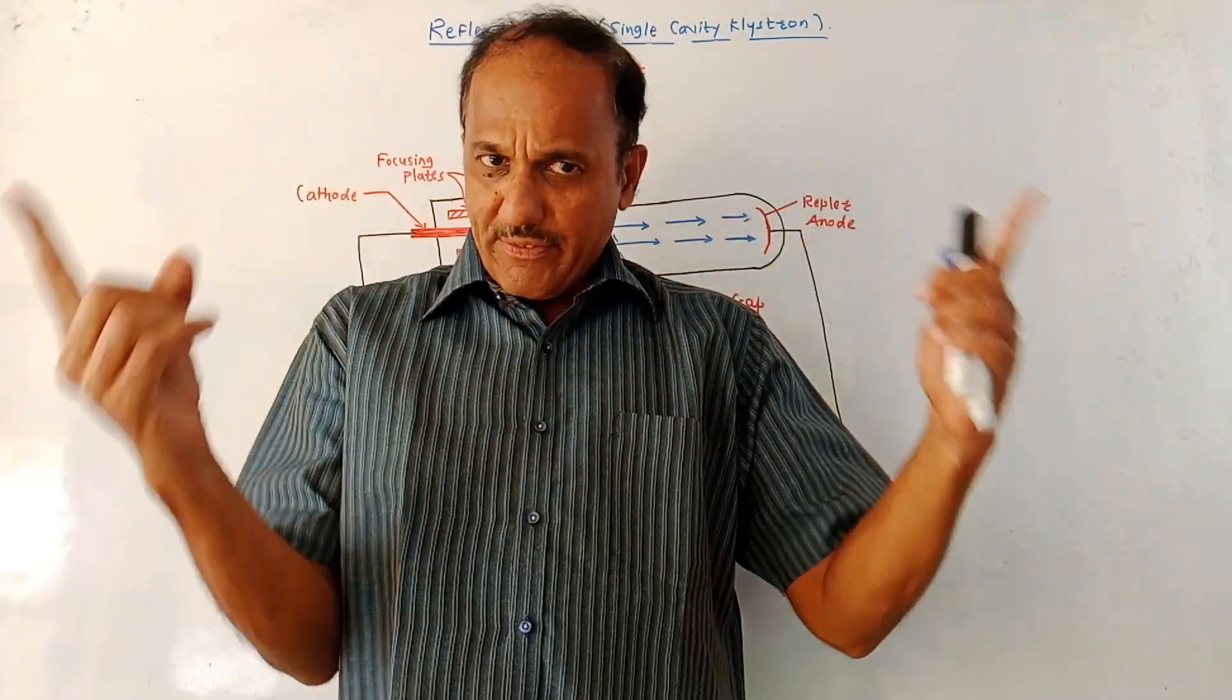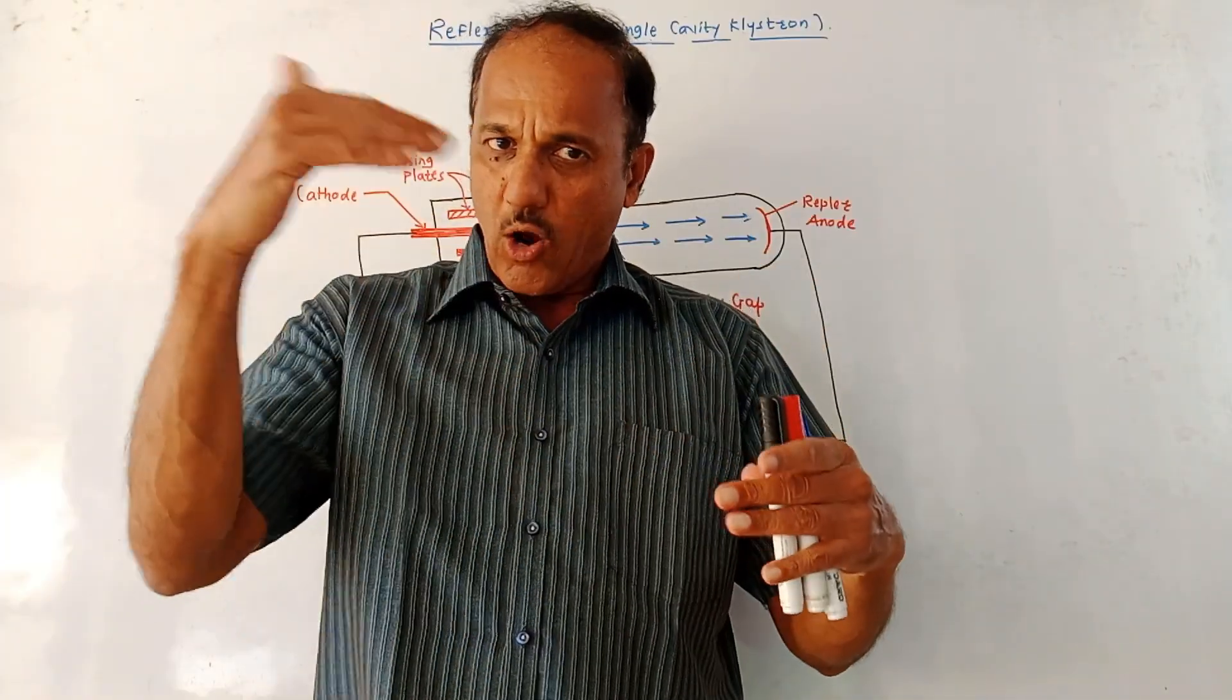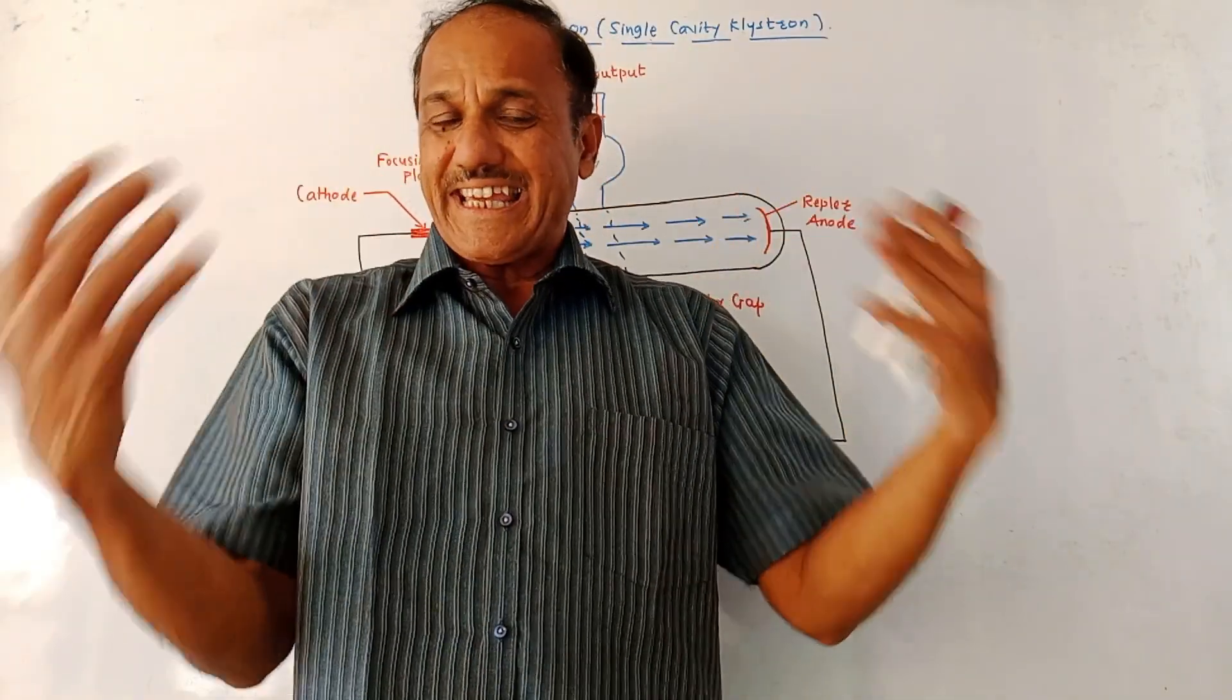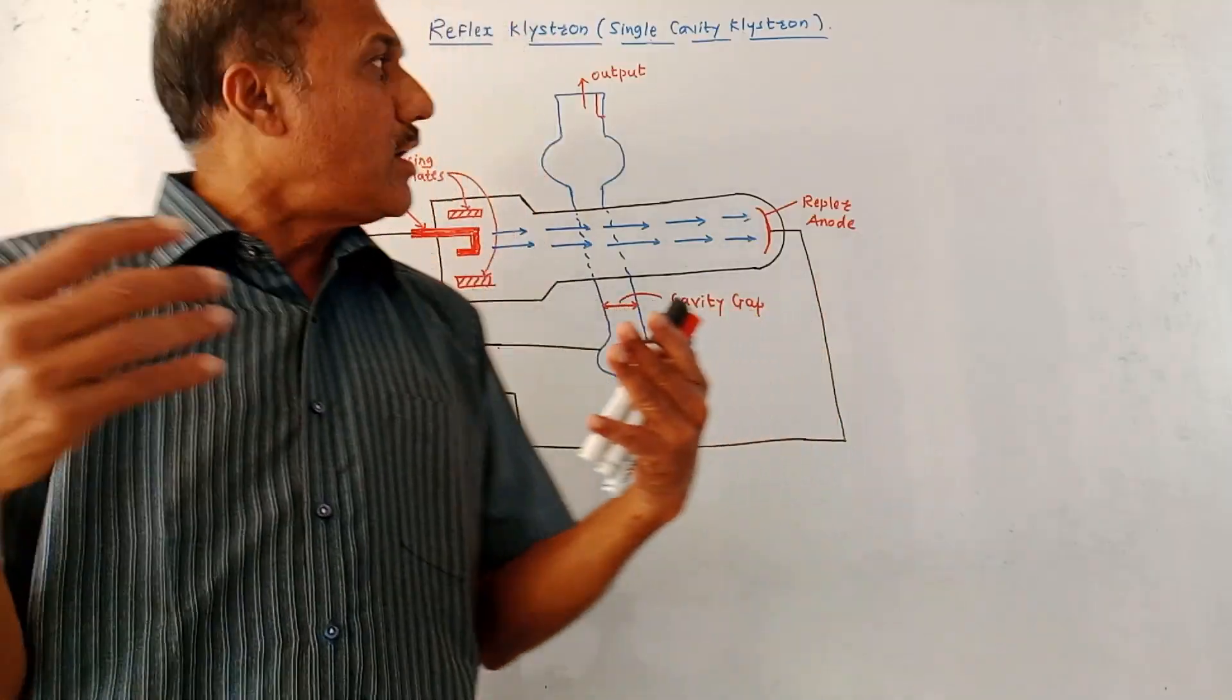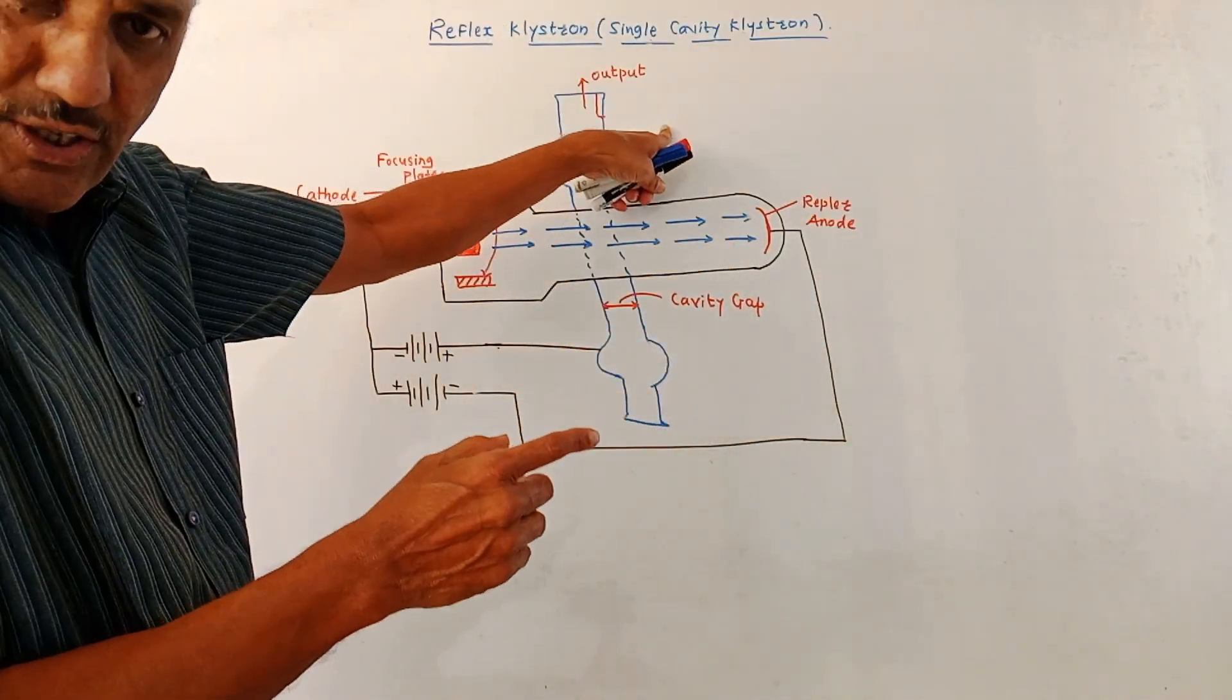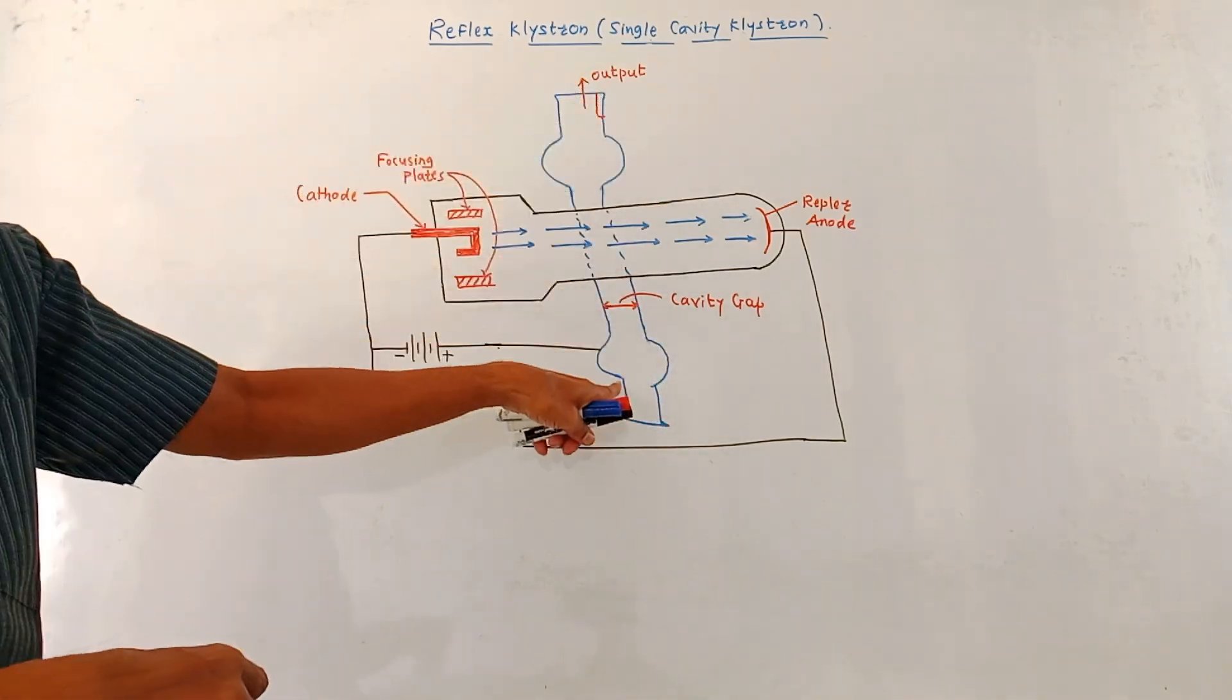In that case, two cavities were used: input cavity or buncher cavity, and output cavity or catcher cavity, and different bunches were formed. Now this is single cavity klystron amplifier. As shown in this diagram, only a single cavity is used.